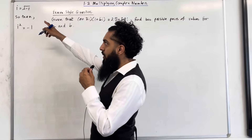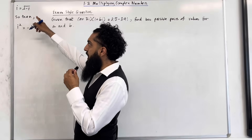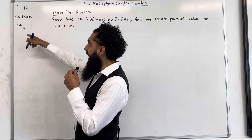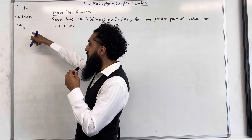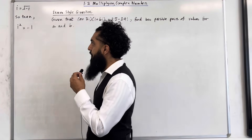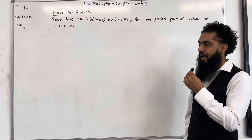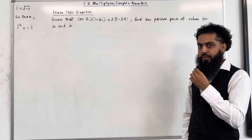Consider i is equal to square root of minus 1. If I square both sides, I get i squared is equal to minus 1. I'm going to be implementing this key fact within two exam style questions.